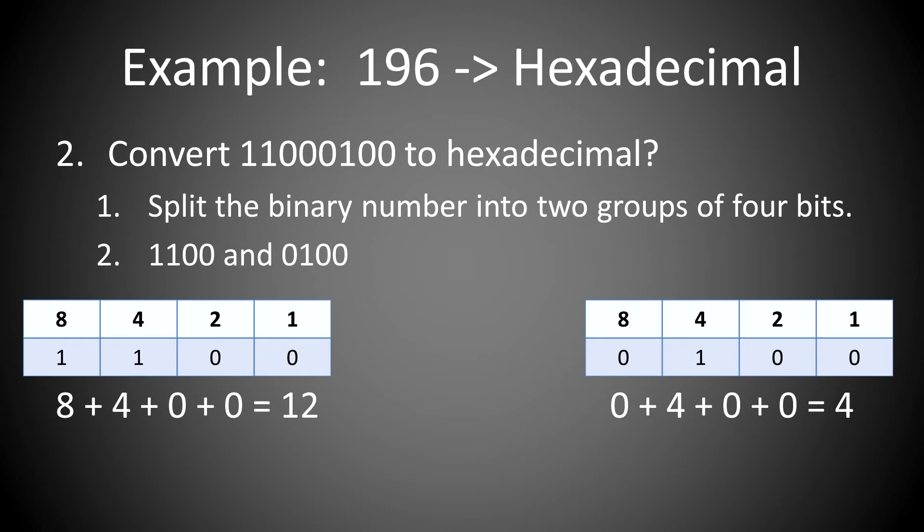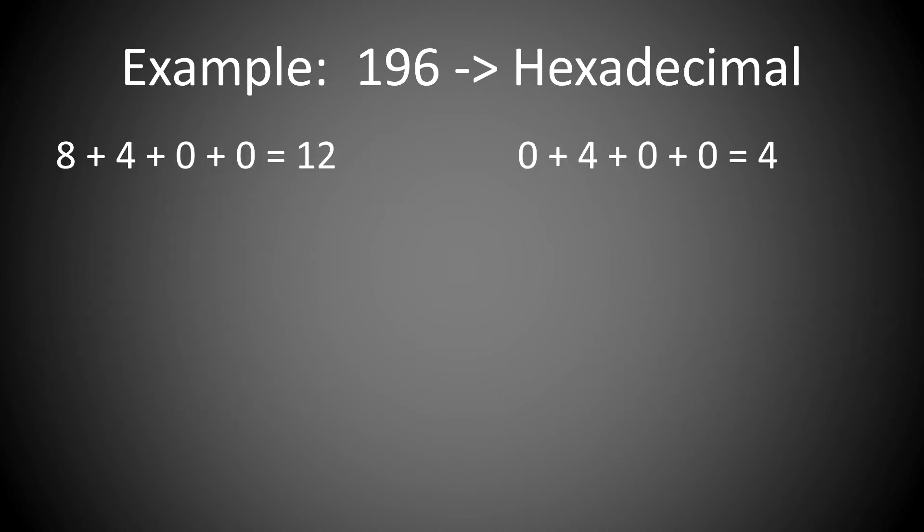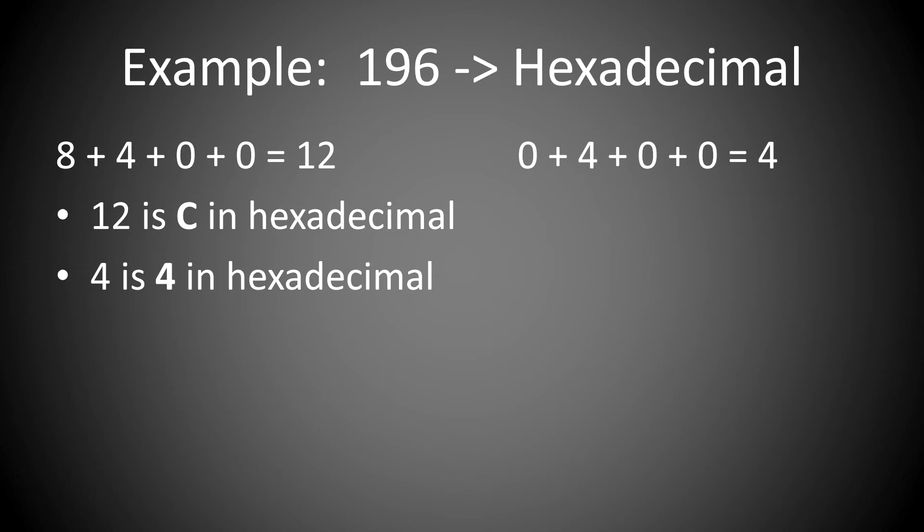1 times 8 is 8, 1 times 4 is 4, 2 times 0 is 0, 1 times 0 is 0, and you add them up to get 12. Do the same thing for the other group of numbers, 0100, which gives 4. So you use the numbers you just found to look up in the table what the hexadecimal representation of each number is. You find that 12 is C, and 4 is 4, which gives the result that 196 is C4 in hexadecimal.